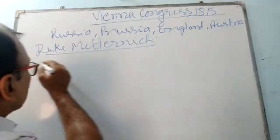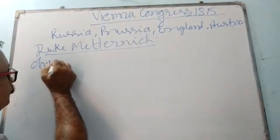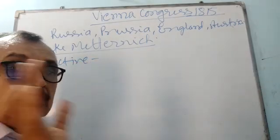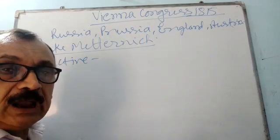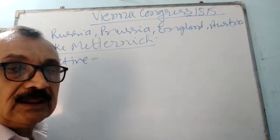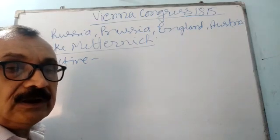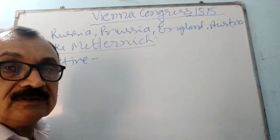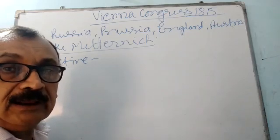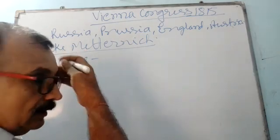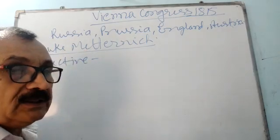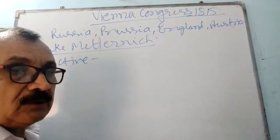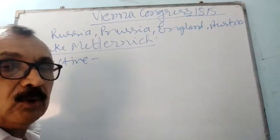The objective of the delegates was to undo the changes which had come in Europe in the post-Revolutionary days, meaning post-1789. So one by one they started undoing the changes which were brought by Napoleon in Europe.